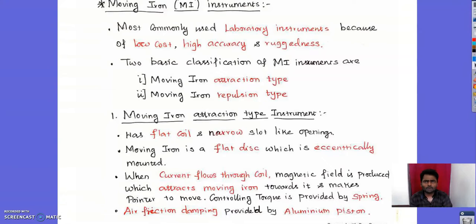The MI instrument is the most commonly used laboratory instrument because of its low cost, high accuracy, and ruggedness of construction. There are two basic classifications: the moving iron attraction type and the moving iron repulsion type.